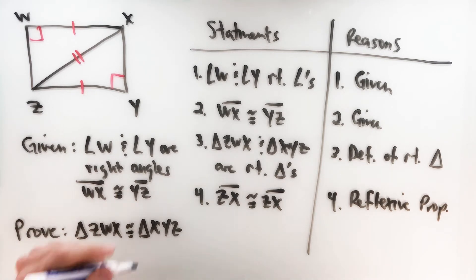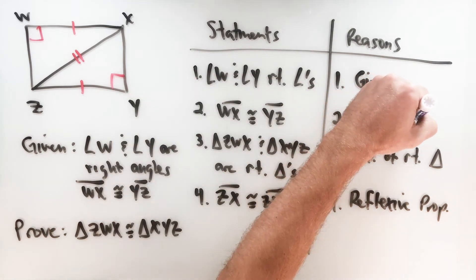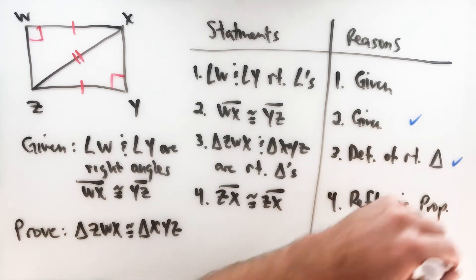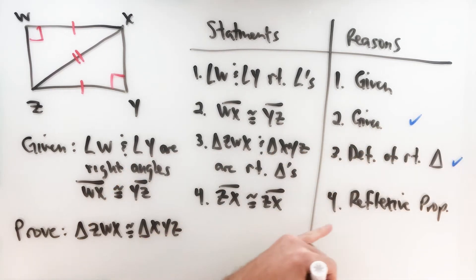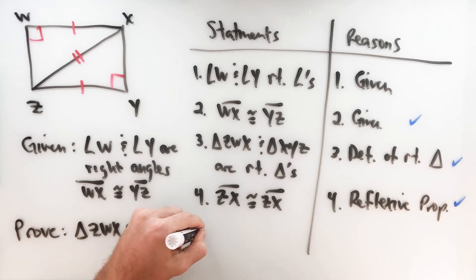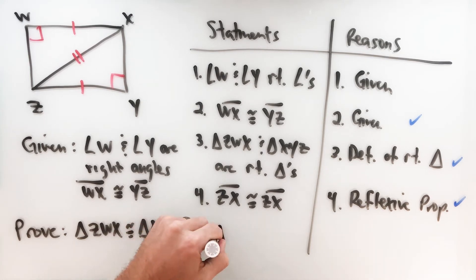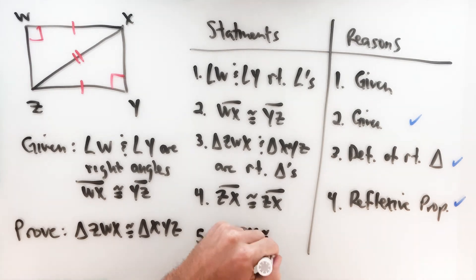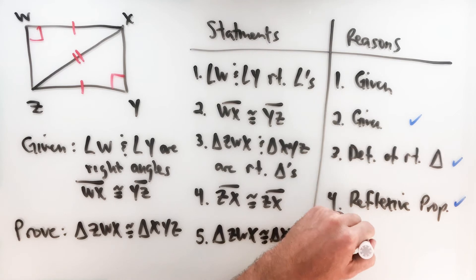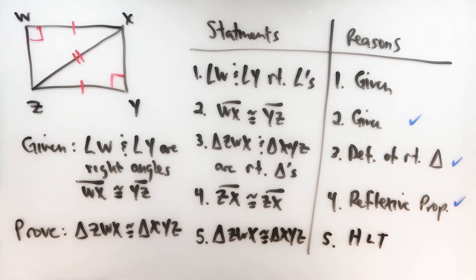With those three things in our proof — the triangles are right triangles, a pair of congruent legs, and congruent hypotenuses — we have enough information to conclude that those two triangles are congruent by the hypotenuse leg theorem. Triangle ZWX is congruent to triangle XYZ by the hypotenuse leg theorem.